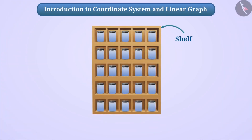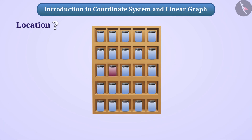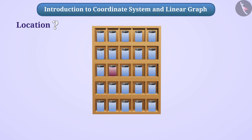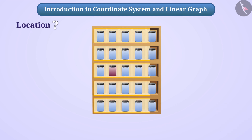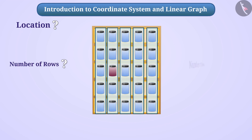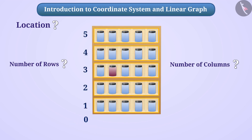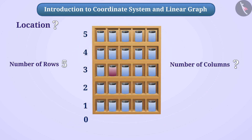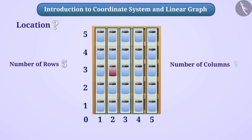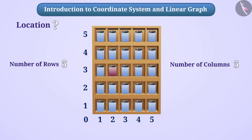This shelf contains several boxes. Can you tell the location of this box? To determine the location of this box, we need the number of rows and number of columns. If we start with 0 from this corner, we can number the rows and columns in this way. We can say that the desired box is in the second column and the third row.